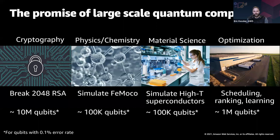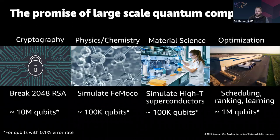We all know why we're here, and I don't want to bore you by going through the general pitch of quantum computing again. As you all know, we know about the Holy Grail algorithms within quantum computing with applications in a broad range of spaces from cryptography, physics and chemistry, material science, and optimization. Even though these algorithms will require error correction and the qubit numbers required are probably deep in the future, these applications are enough motivation to be really excited about this field.